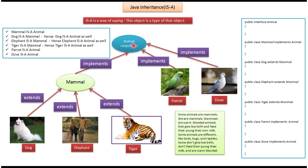Here you can see the animal interface. Mammal implements animal, so mammal is an animal. Parrot implements animal, so parrot is an animal. Dove implements animal, so dove is an animal. Dog extends mammal, so dog is a mammal and also dog is an animal. Elephant extends mammal, so elephant is a mammal and also elephant is an animal. Tiger extends mammal, so tiger is a mammal and also tiger is an animal.